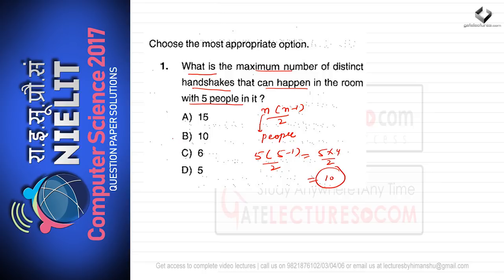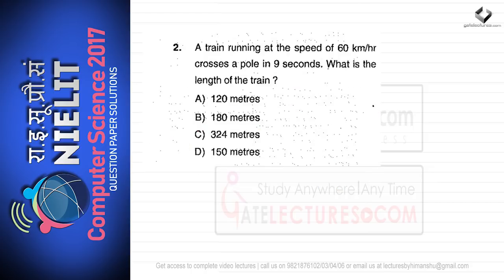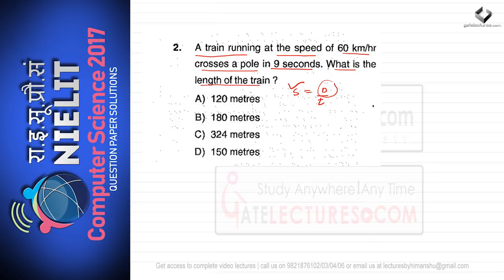Option B is the correct option for this question. The next question: a train running at a speed of 60 kilometers per hour crosses a pole in nine seconds. What is the length of the train? Speed equals distance over time. The train covers its own length in nine seconds, so the time is nine seconds and speed is 60 km/h.